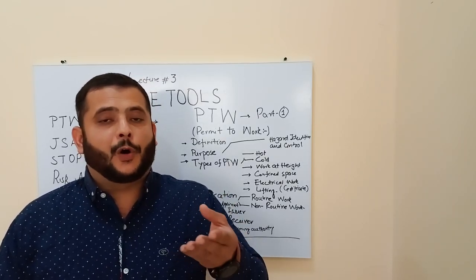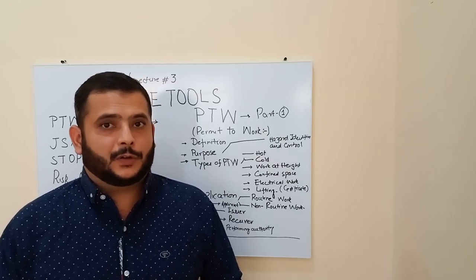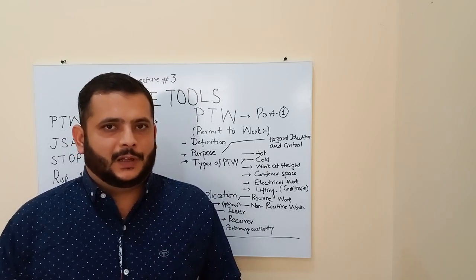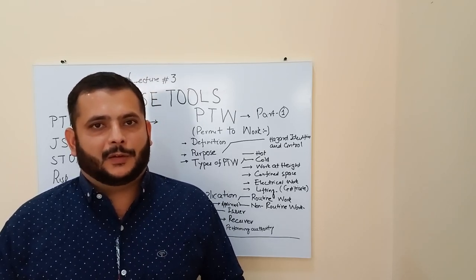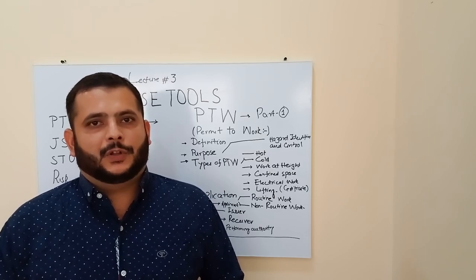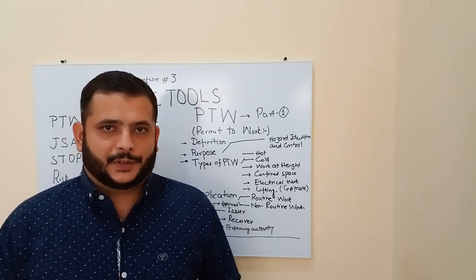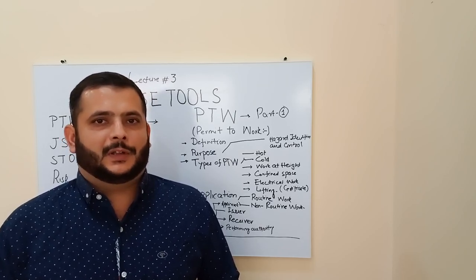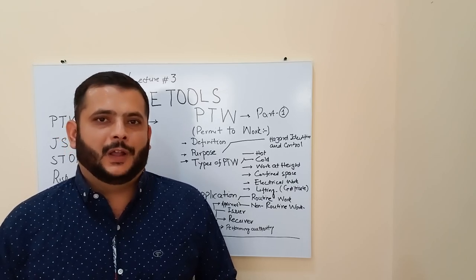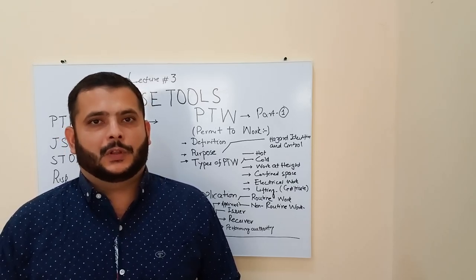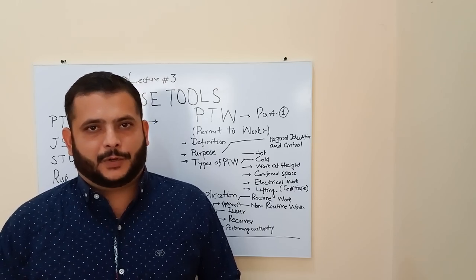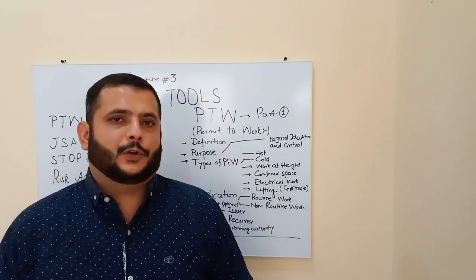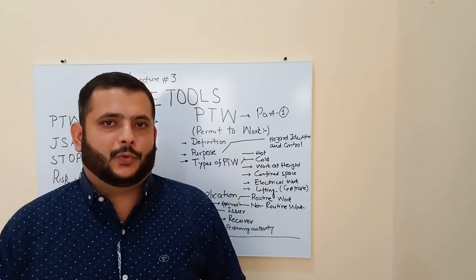The Permit to Work system is a written formal document. It is formal and it is mandatory. When you are doing something, you must take into account the persons doing the job with you — your managers and line departments who are accountable and responsible for the things you will do at the work site. Before doing the operation, you have to go through some written documents, which is called the Permit to Work system.